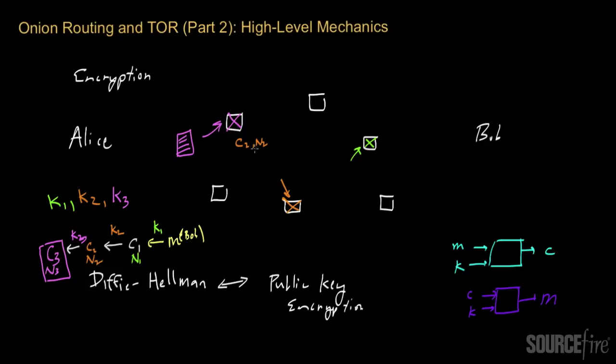And so as a result, this first TOR node will be able to decrypt the ciphertext C3 and get back in the process the ciphertext C2 together with a node identity N2. And so it'll see this encrypted blob. It won't know anything about what's inside of C2, but it will know because it sees N2 that the ciphertext C2 is going to be forwarded over to the node N2.